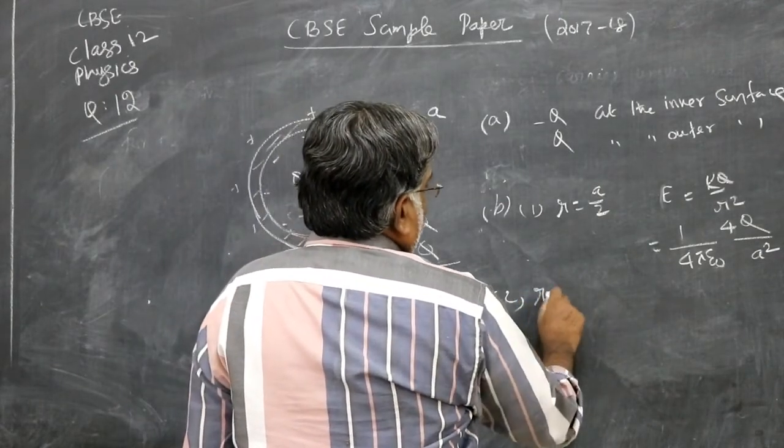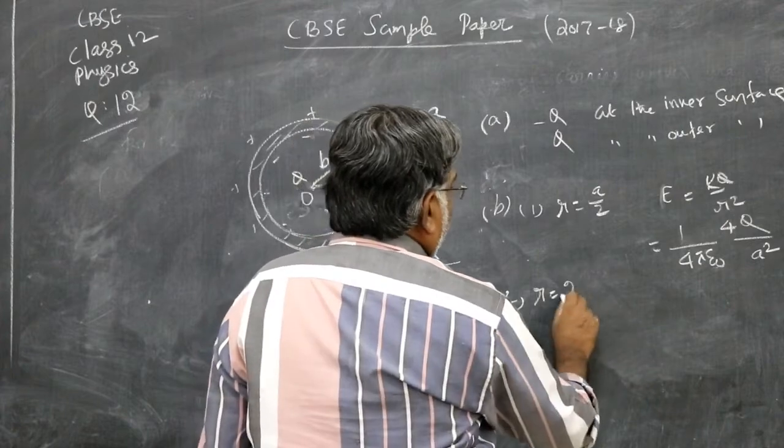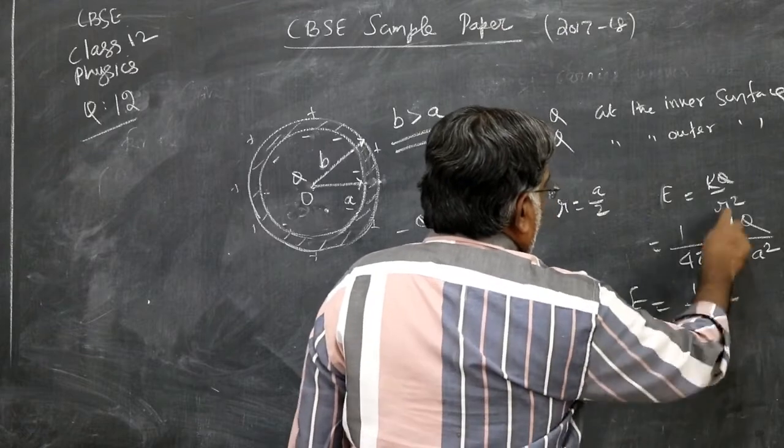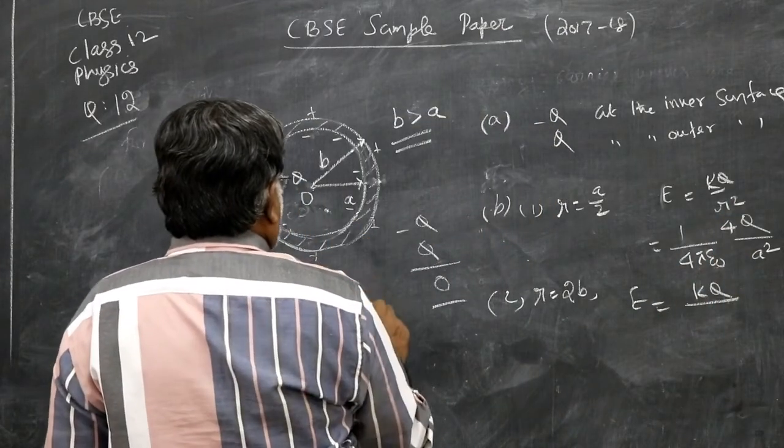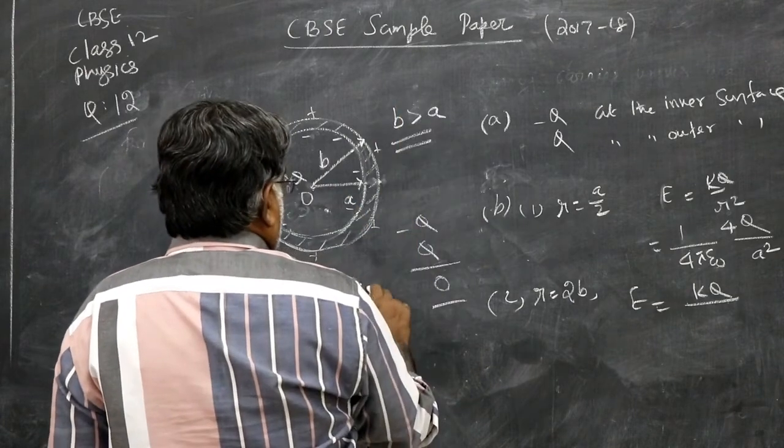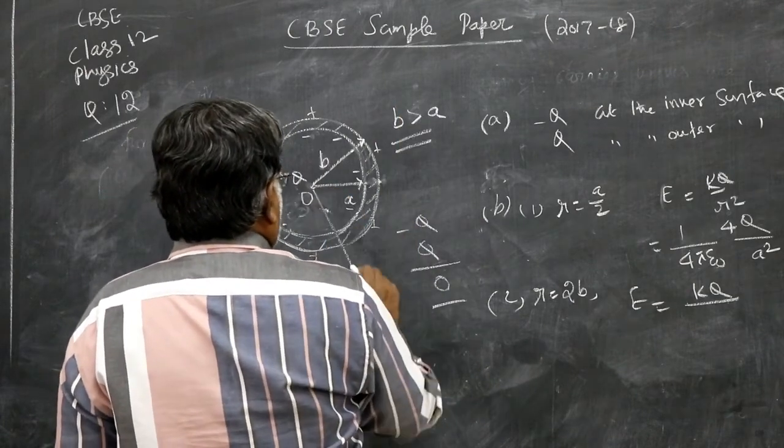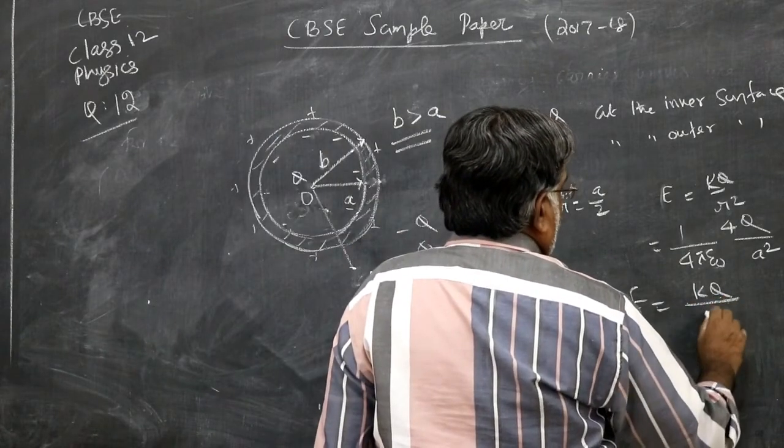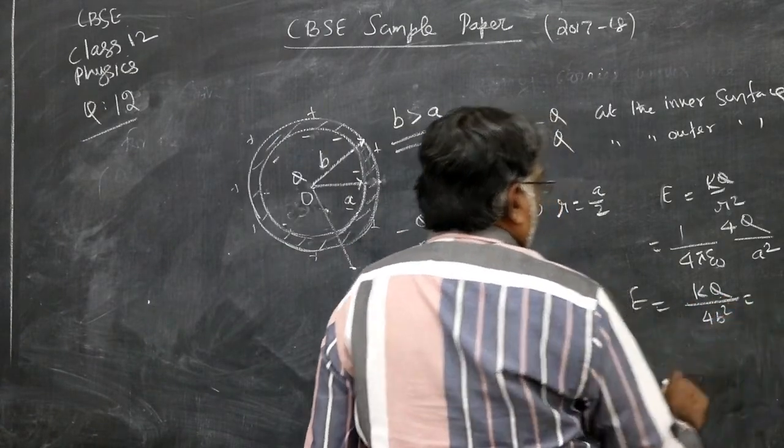Then second case R is equal to 2B. Again, E is equal to K Q by R squared but the point will come somewhere here 2B. Point may be somewhere here 2B. So K Q by R squared 4B squared. K is 1 by 4 pi epsilon naught.